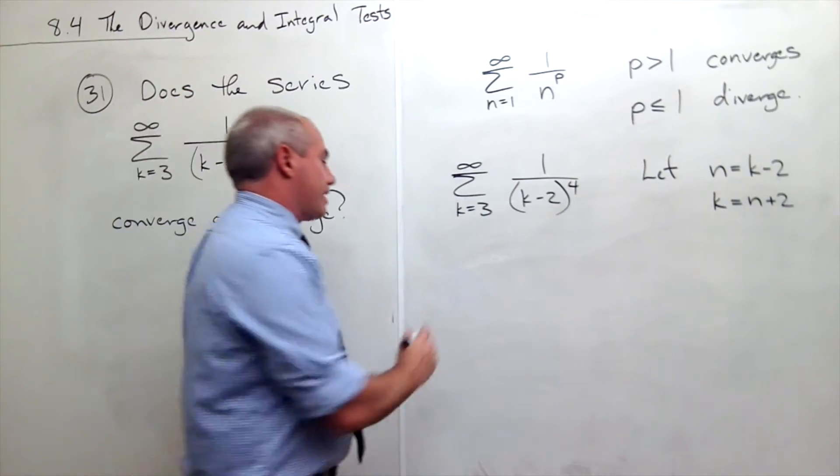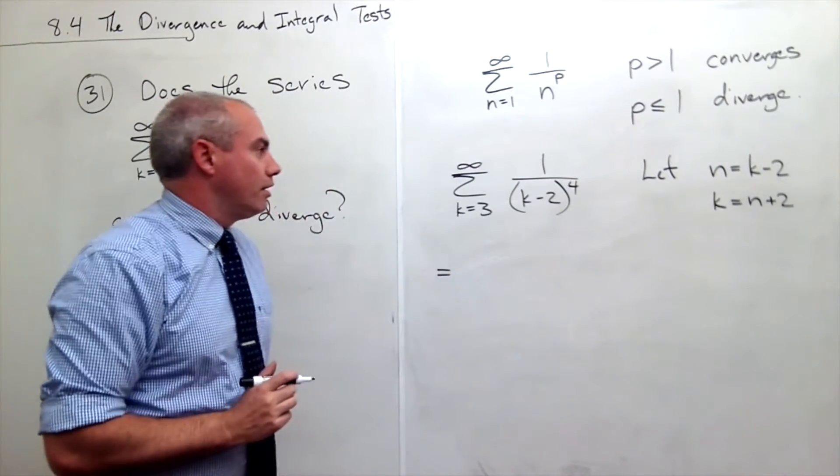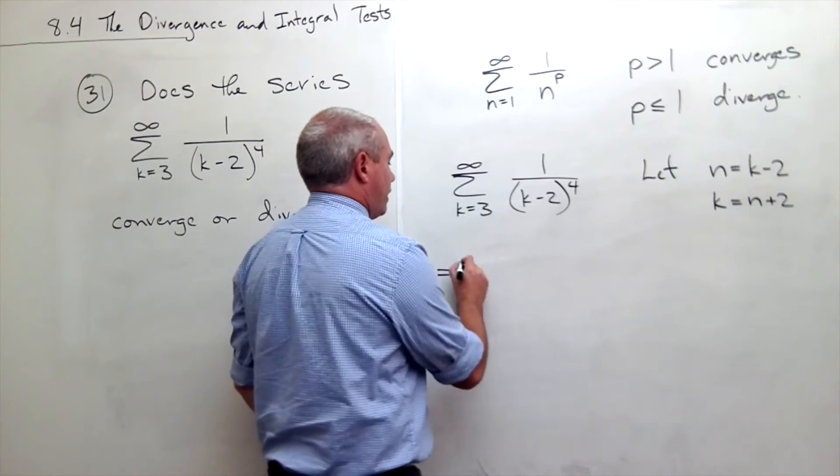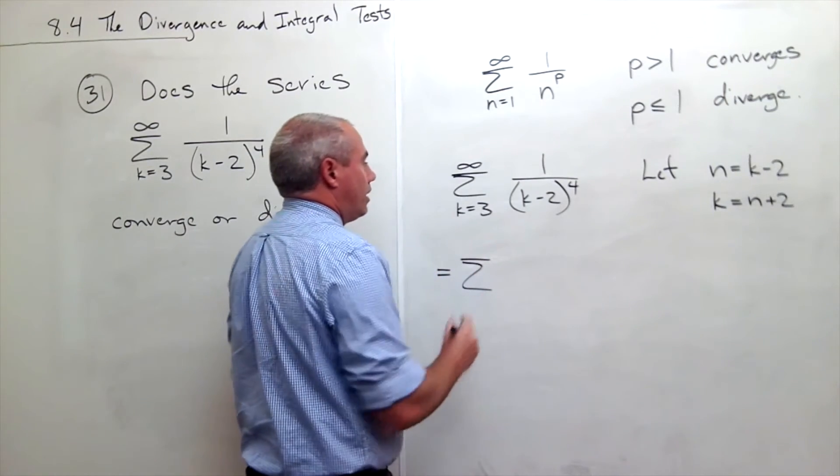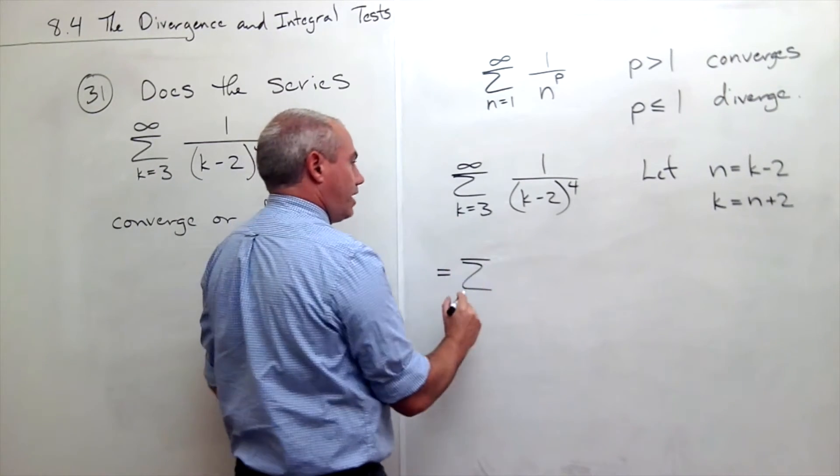Now, if I kind of make a substitution here for k, then I can write this as the sum. k is n plus 2,